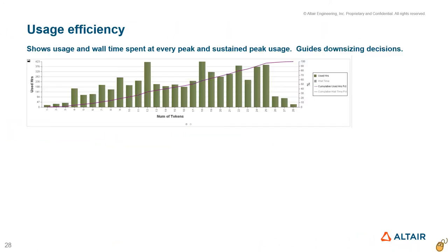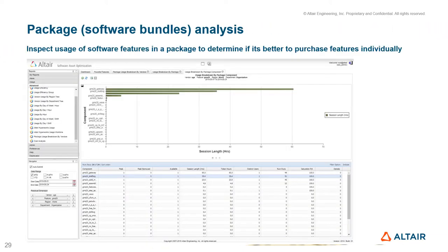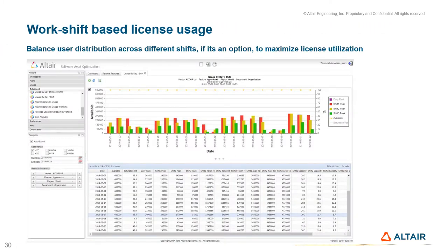The usage efficiency report shows usage and wall time for each license count and sustained peak percentage. Package analysis includes a ranking chart for all software included in a package or a bundle. It is also possible to configure a shift-based peak usage report that can help balance user distribution across work shifts.